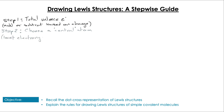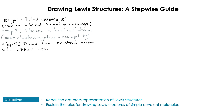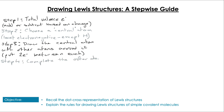Step two: choose a central atom. This is going to be the least electronegative atom in the molecule, except in the case of hydrogen, which is never the central atom. For step three, draw that central atom in the middle with the other atoms surrounding it. You don't need to worry about orientation just yet, but you will draw a line — representing two electrons — between the central atom and each of the surrounding atoms.